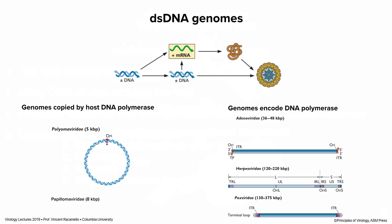These viruses fall into two classes depending on whether genomes are copied by host DNA polymerase or by a virus-encoded DNA polymerase. Those copied by host DNA polymerases are small — not enough room to encode a polymerase gene. They include polyoma viruses and papillomaviruses: circular double-stranded DNA, about 5–8 kilobases. Bigger genomes — adenoviruses at 36,000–48,000 base pairs, herpes viruses at 120,000–220,000 base pairs, and poxviruses up to 375,000 base pairs — all encode their own DNA polymerase and many other proteins, replicated by genome-encoded DNA polymerases.